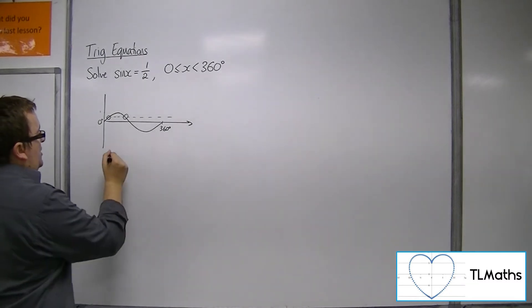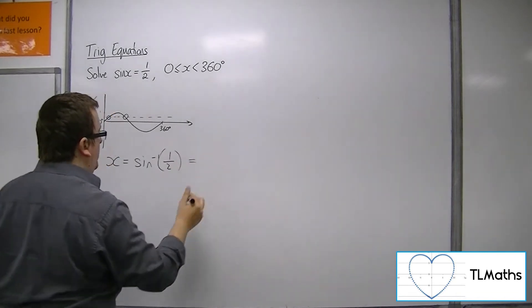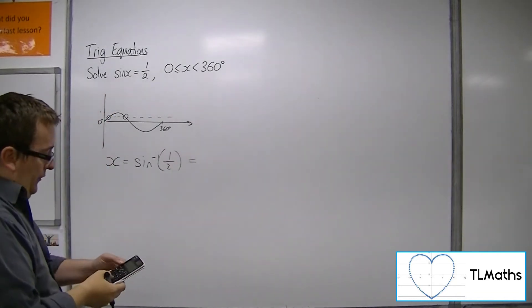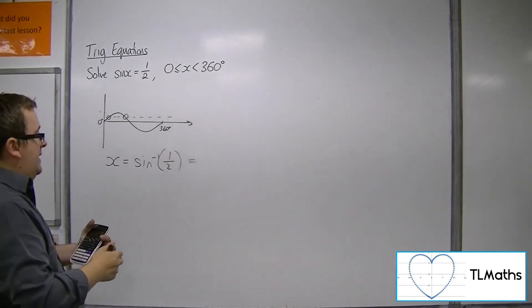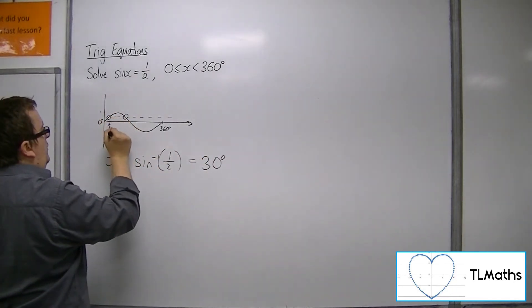Now the first solution is found by taking inverse sine of both sides. So inverse sine of a half gets you 30 degrees. So this first solution is 30.